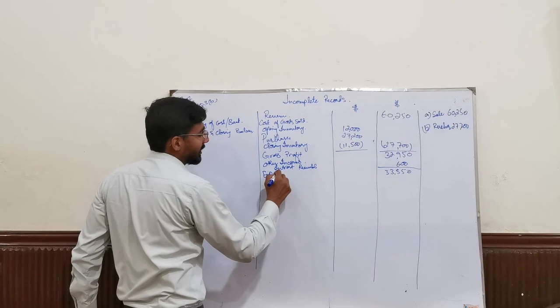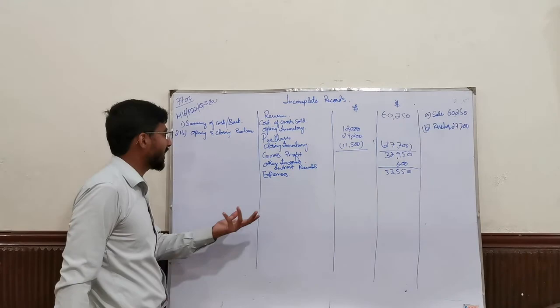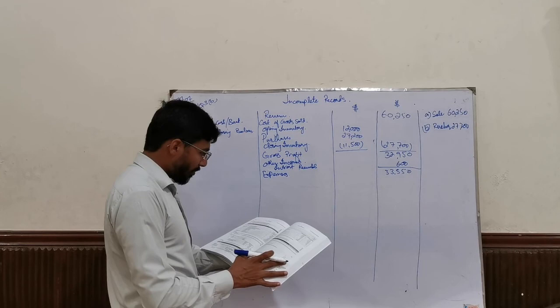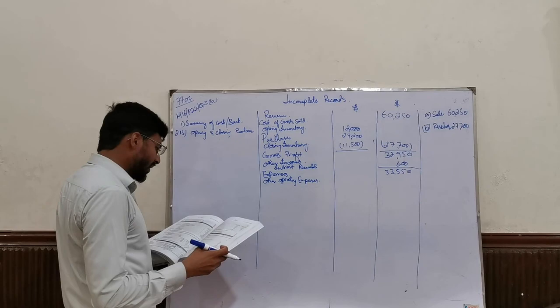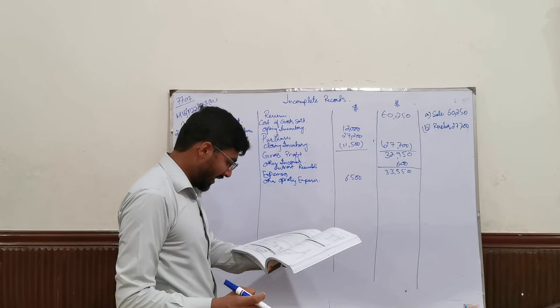After this, I am going to do less expenses. I am going to get expenses from the credit side of my summarized cash book or bank statement, and with the help of opening and closing balances. The first expense is other operating expenses. There is no opening and closing balance for this, so I am simply going to write 6,500.